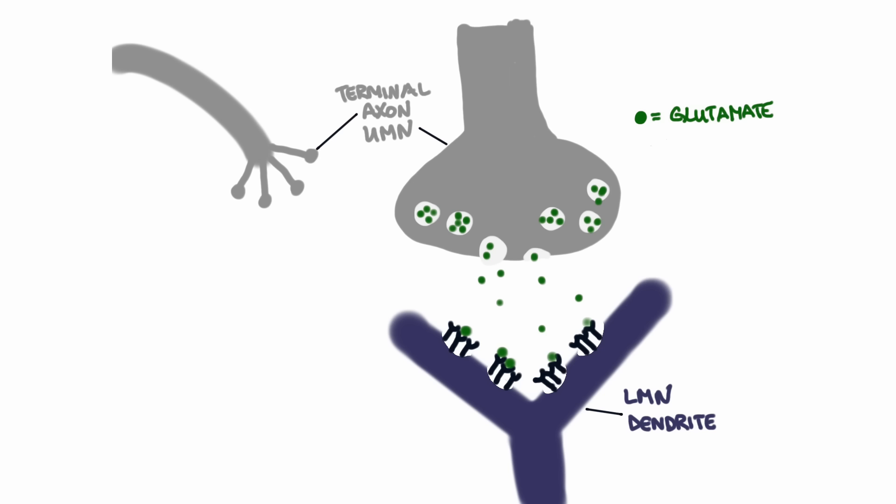I release glutamate, which is my neurotransmitter, from my terminal axon. It crosses the synapse and is received by the lower motor neuron's dendrites. In this way, we share information critical to the voluntary movement of the thumb.